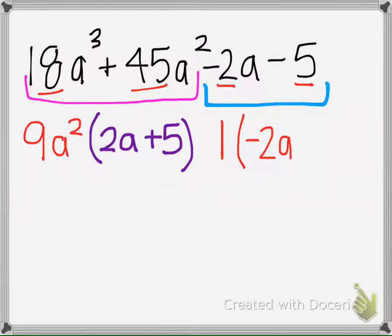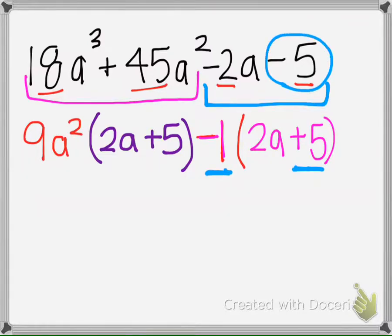So that is how I know that it shouldn't be negative 2A, that this needs to be a minus 1 here. And then negative 1 times 2A makes negative 2A. And then negative 1 times positive 5 makes negative 5.